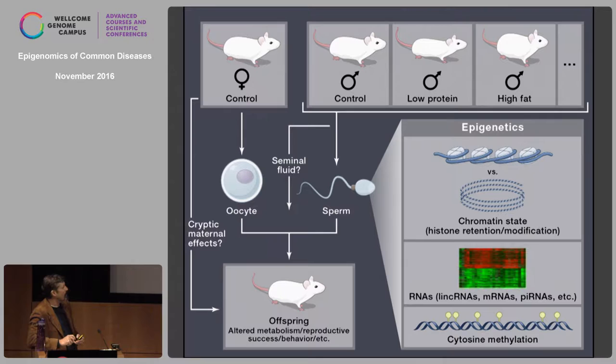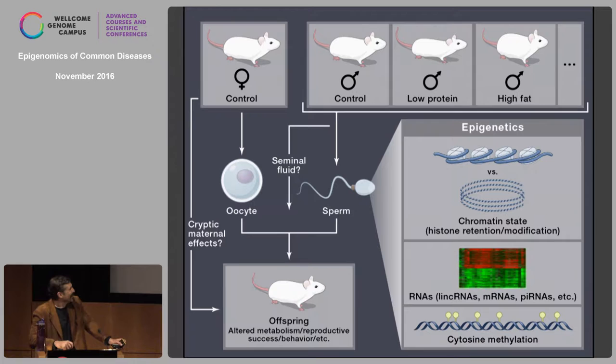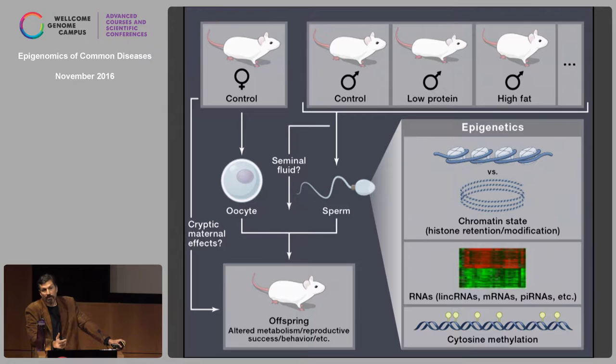To separate these, we turned to in vitro fertilization, where you purify the gametes away from all these other factors, mix them, make a zygote, implant it into a pseudopregnant female, and analyze the child. All reproduction in our lab now goes through IVF. We managed to produce a supplemental figure showing we can recapitulate the effect of low-protein diet using purified sperm. So the information in our system is in sperm, or co-purifies with sperm.